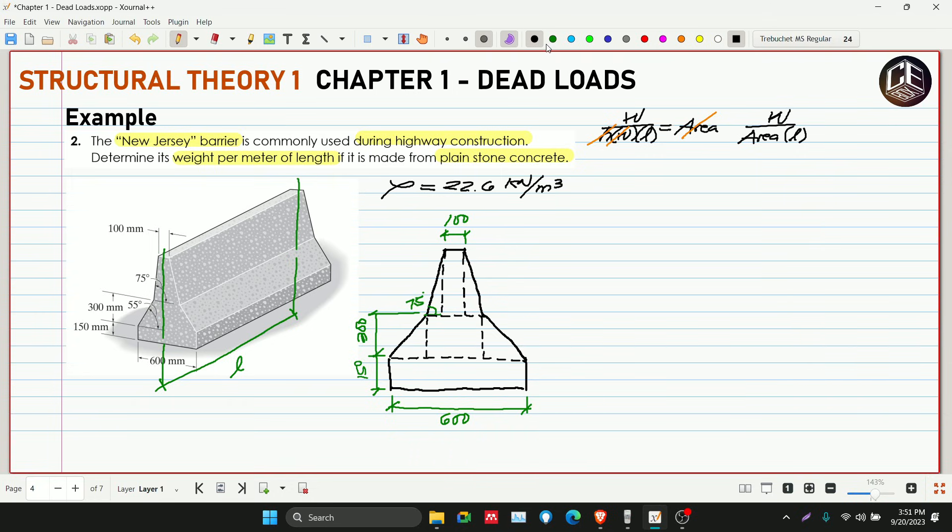So hati-hatiin natin yung mga area. Let's say this is our area 1. And then this is our area 2. And then this is our area top. Then ito naman area 3, 4, and then 5. Yung orange.